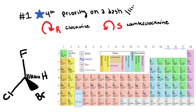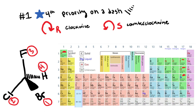The first scenario is when we have the fourth priority on a dash. I have to assign priorities. Here's my fluorine, my chlorine, my bromine, and my hydrogen. Using atomic number: bromine is at 35, so it's going to be first priority, followed by chlorine at 17, followed by fluorine at 9, and then the fourth priority is the hydrogen at 1.